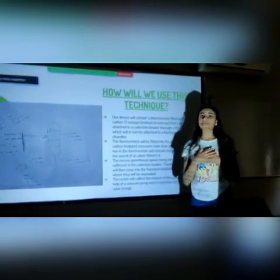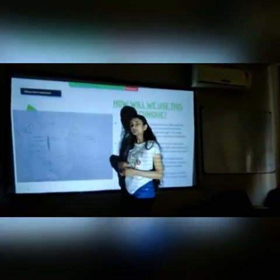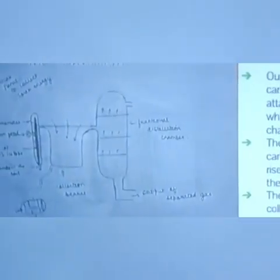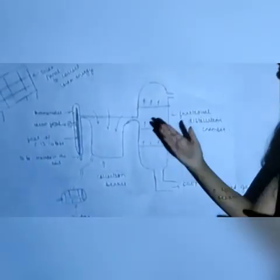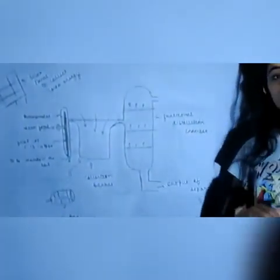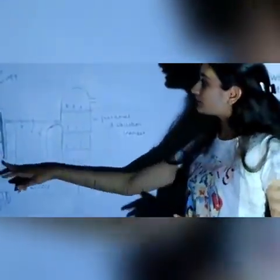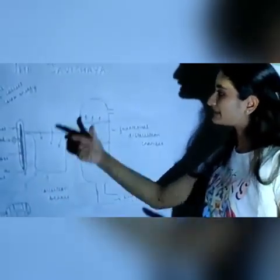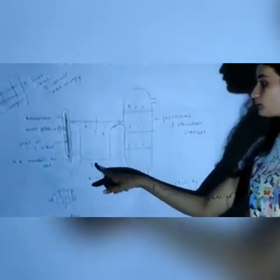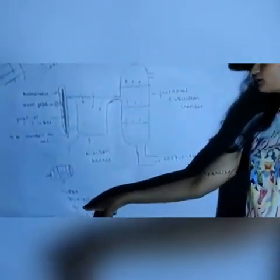Our device will contain a thermometer filled with a carbon-13 isotope instead of mercury, that will be attached to a collection beaker through a thin pipe which is connected to a fractional distillation chamber. The thermometer will be fitted into the soil. So if the level of carbon footprints released exceeds the allowed limit, the thermometer will indicate the same through a rise in level and through a sound made by the alarm fitted in it. The excess greenhouse gases being released will be collected by the collection chamber, powered through a vacuum pump run by a motor that takes power from a solar panel.